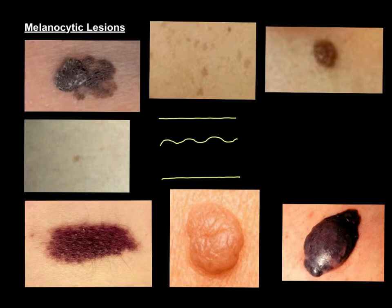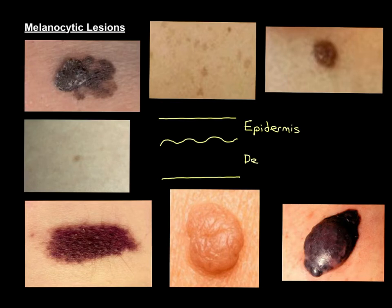Instead, the interface is a wavy sort of structure, and this stops the epidermis sliding over the dermis — it keeps the two nicely held together. So on top we have the epidermis and underneath is the dermis. Just to make it absolutely crystal clear, the outside world is above and underneath is where the rest of the body is.